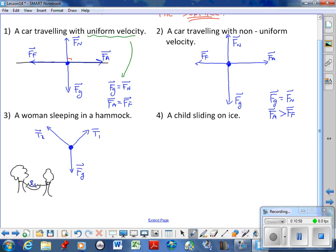A child sliding on ice. So, if this is the child, now we have a surface. We're on the ice surface. So, we have a force due to gravity. And, because we're on the surface, we'll have normal force. Fg is equal to Fn.